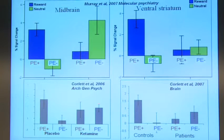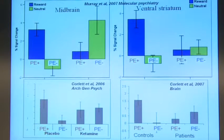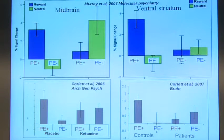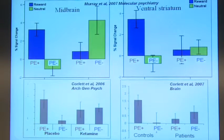Phil Corlett then took exactly the same task and gave it to people both on placebo and on ketamine in a crossover study. On placebo, you see in the frontal cortex the predicted difference, but that's lost under ketamine. Ketamine, which we know produces a psychosis-like state, has the same effect on prediction error-dependent firing. And this was at a low dose, where participants didn't even experience much of a psychosis.